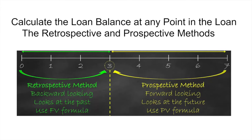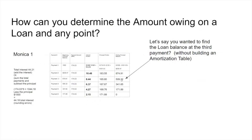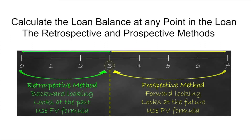Here is an illustration of the method. Look at the timeline along here. Let's assume that you want to know the balance at point number three — which is exactly what we want to do here. If we look at the front end of it, from zero to three, we can use the retrospective method. What that does is backward-looking — it looks at the past — to find the future values of a couple of things: the payments themselves and the original amount of the loan.